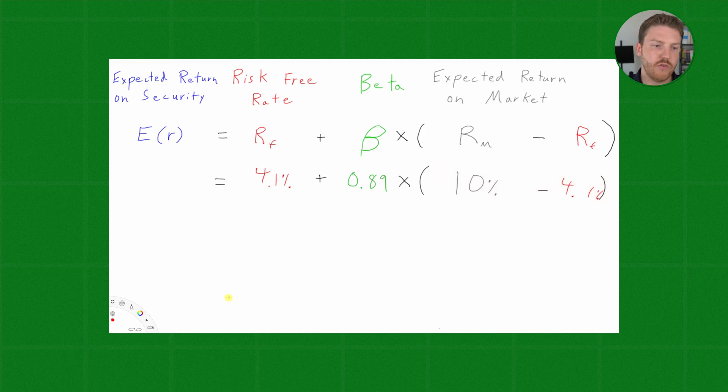So, if we solve for this whole formula to get to our expected return, we'll find that we're going to get 4.1%, which is the risk-free component plus, and if we do the math here, that ends up being 5.25%. And to invest in Microsoft based on the CAPM, we expect to have a return on this security of 9.35%.